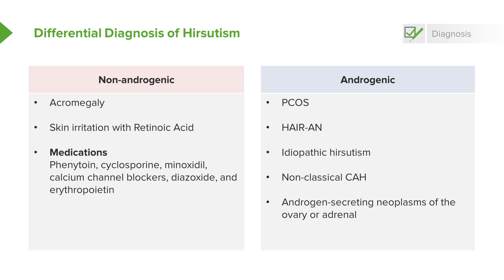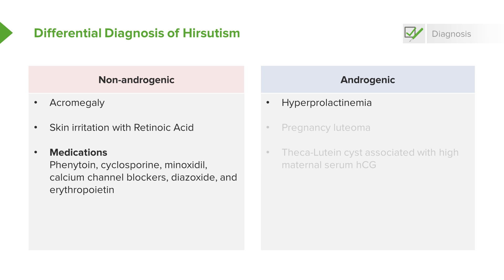Very rarely, we can see androgen-secreting neoplasms in the ovary or the adrenal. Recall that elevated prolactin can also cause hirsutism. Luteoma of pregnancy can also be an androgenic cause, and this usually happens when the placenta also has some issue. Thecalutein cysts are also associated with high maternal serum HCG.